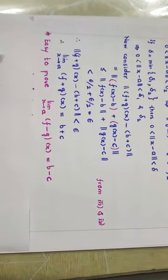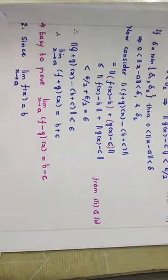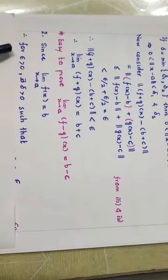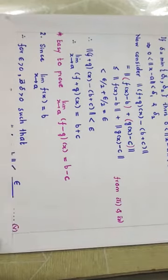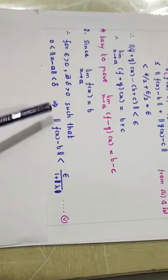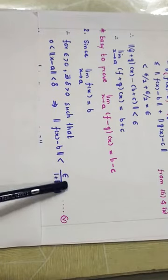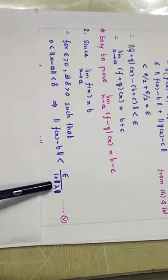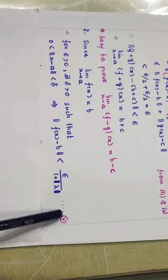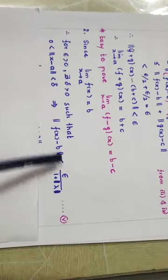Similarly, on the same lines, we can easily prove that the limit of the difference F minus G will be B minus C. Now for the second property: starting with limit of F(X) equals B, by definition, for given epsilon positive there is some delta positive such that norm of X minus A less than delta implies norm of F(X) minus B is strictly less than epsilon upon (1 + mod of lambda). This is less than epsilon since epsilon divided by anything greater than 1 is less than epsilon. Call this equation 5.